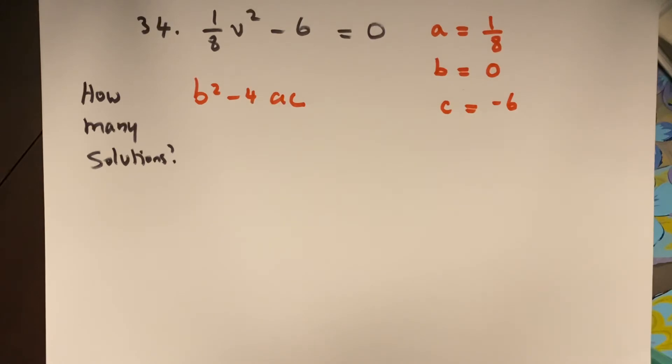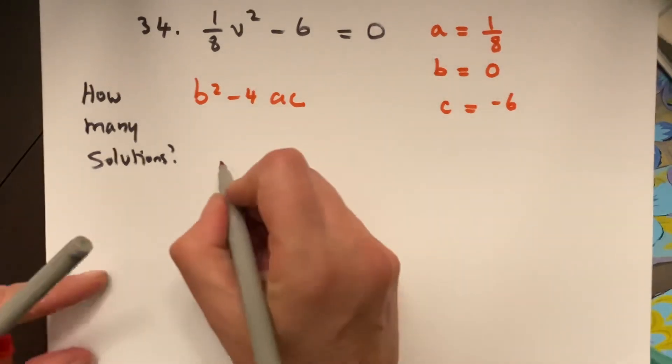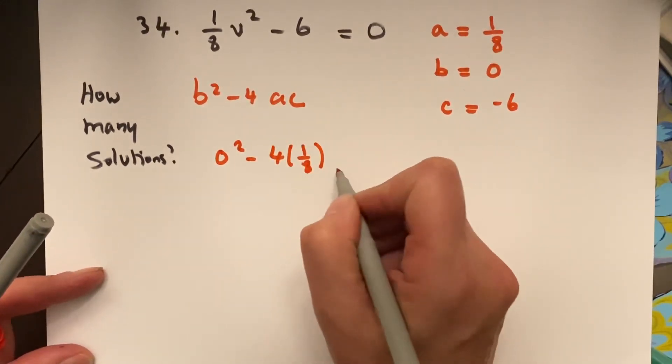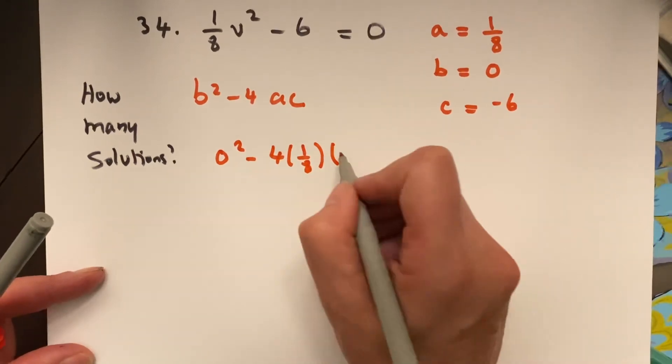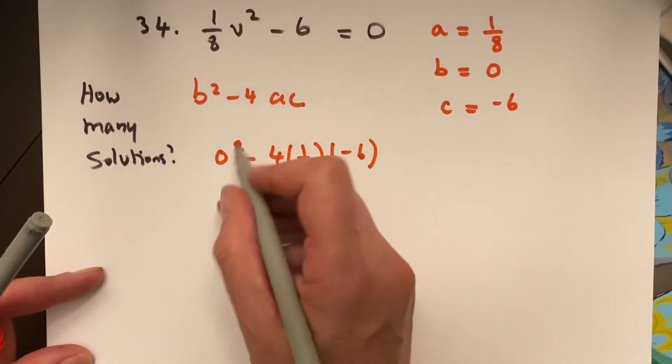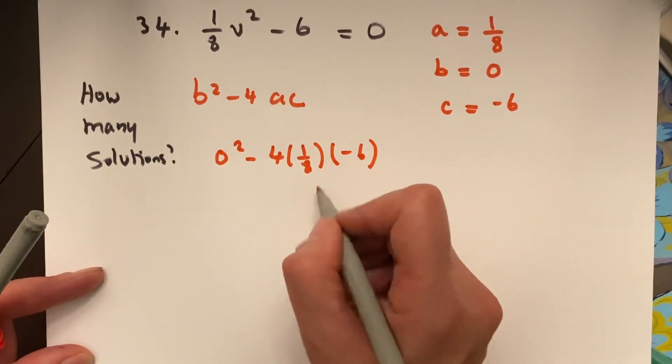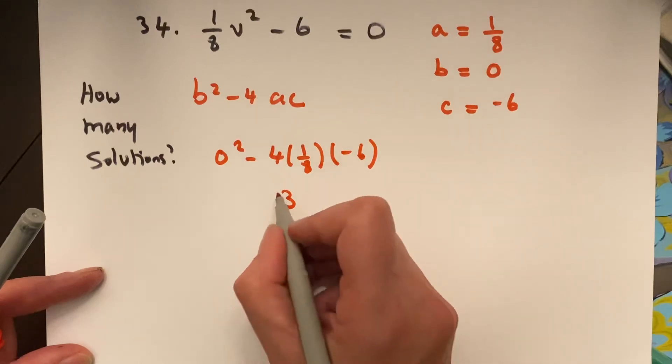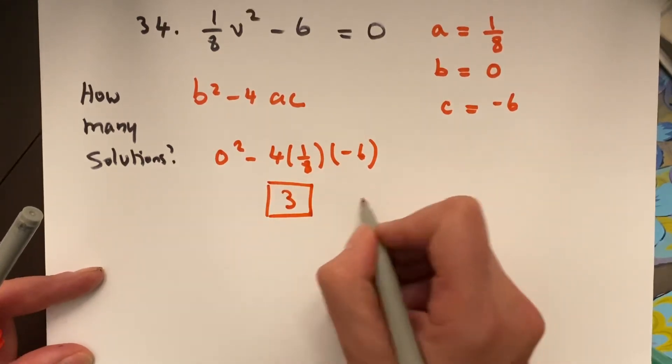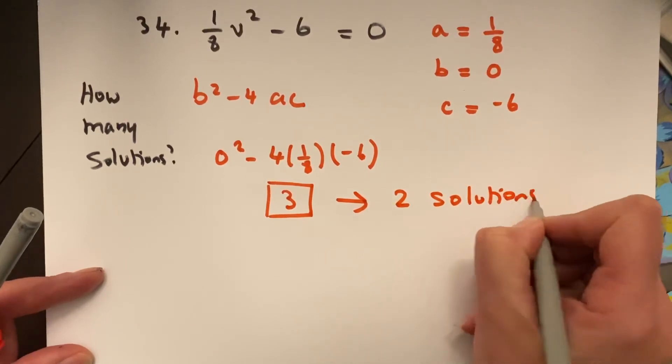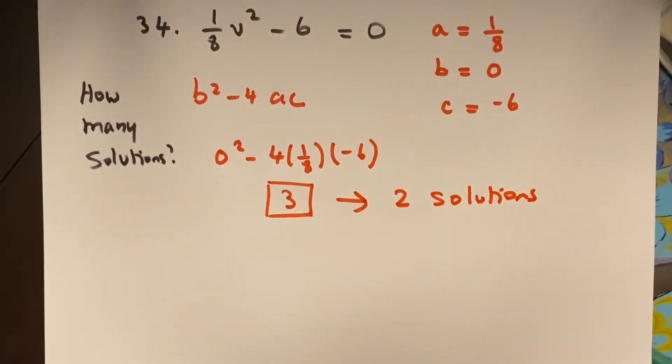So, b squared minus 4ac. Well, that's not hard. b is 0, right? So, I have 0 squared, minus 4, times 1/8, times c, which is negative 6. Well, this is going to give me a negative, a negative, which is a positive. Positive 24 divided by 8 is 3. So, since I actually get a positive number, the answer is 2 solutions. And that's number 34 under 10.7, interpret the discriminant.